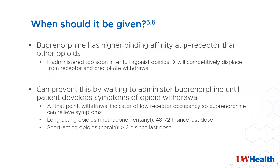Once the dose has been determined, it's reasonable to ask when it should be given. Buprenorphine actually has a higher binding affinity at the mu-opioid receptor than other opioids, which means that if it is given too soon after full agonists, it will competitively displace them from their receptor and precipitate withdrawal in the patient. We can reduce the risk of this happening by waiting to give it until the patient develops symptoms of withdrawal. For opioids that stick around for longer, this might mean waiting up to 48 to 72 hours since their last use. For some of the shorter-acting ones, it may be only 12 hours. Although fentanyl is very short-acting, its withdrawal can take longer because it is very lipophilic and can accumulate in fatty tissues.